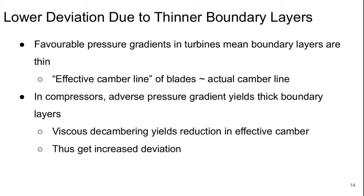We have favorable pressure gradients in turbines and these mean that the boundary layers tend to be very thin. So the effective camber line in the blades typically is actually like what the geometric camber line is.